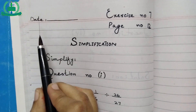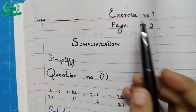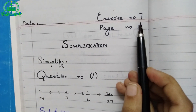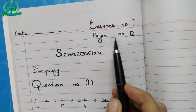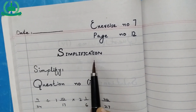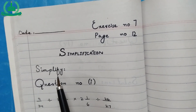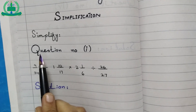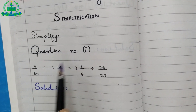Open your math register. Draw margin line. Mention the date. Exercise number 7, page number 12. Write the heading: simplification. Question number 1.